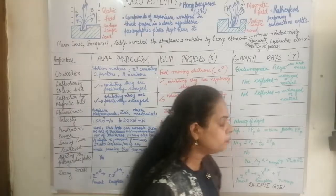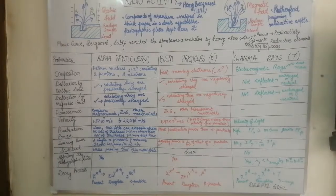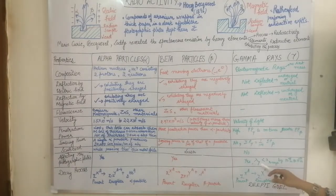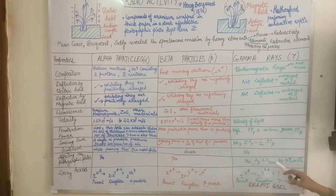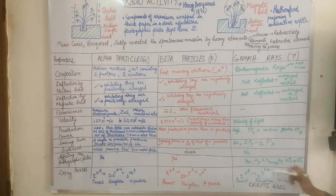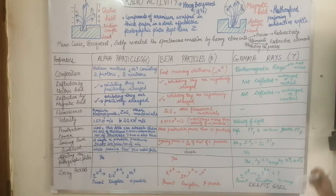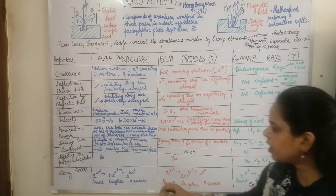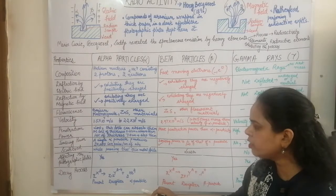The wavelength of gamma rays is smaller than that of X-rays, ranging from 10⁻¹¹ m to 10⁻¹³ m. The decay process again: in alpha decay, the parent nucleus forms a stable daughter nucleus by emitting 2He4, reducing the atomic number by 2 and mass number by 4.